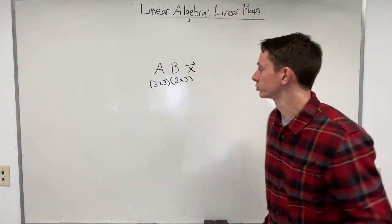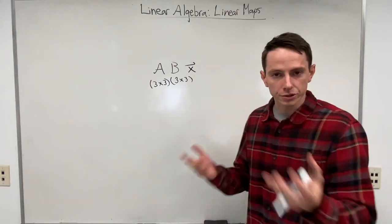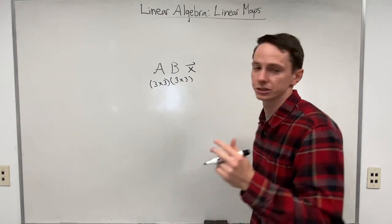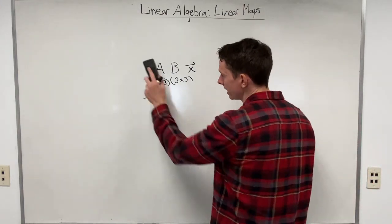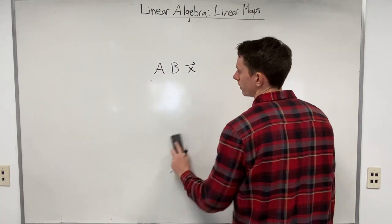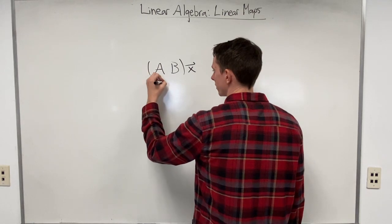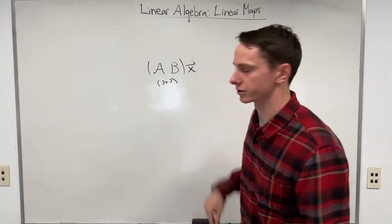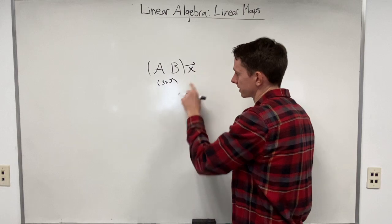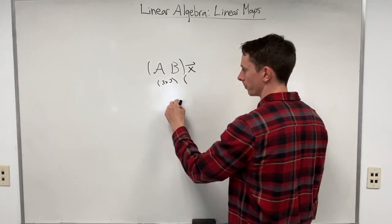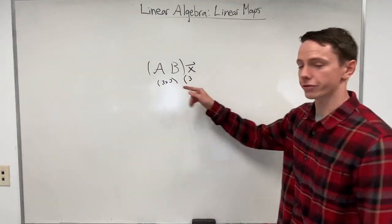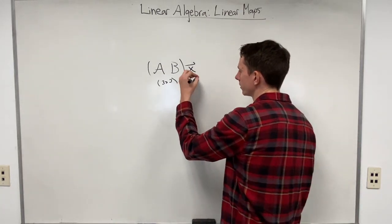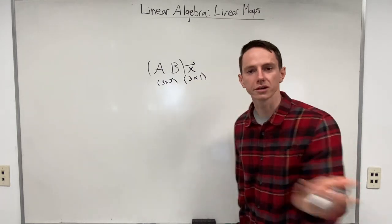We could ask what the dimensions of this vector x would have to be. The resulting matrix has dimensions three-by-three, so if A is three-by-three and B is three-by-three, the resulting matrix together will be three-by-three. This tells us what dimension our vector needs to be — the inner dimensions always need to match. So if this is a three, x has to have three rows, making it a three-by-one column vector.